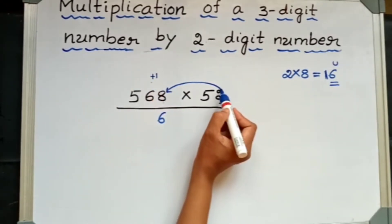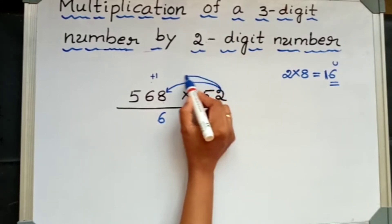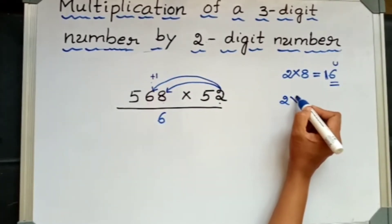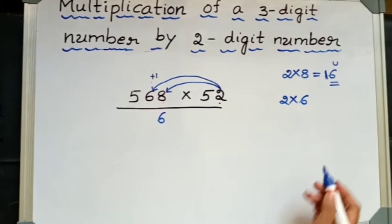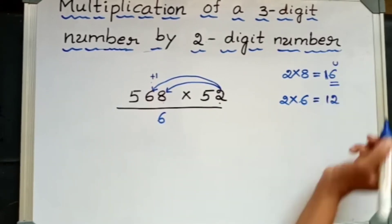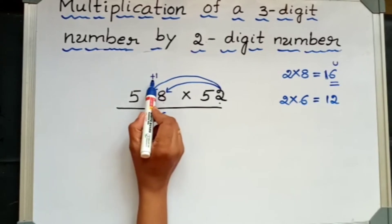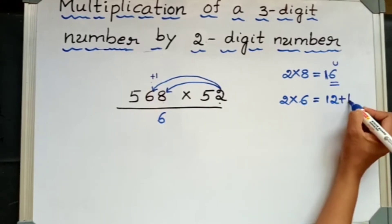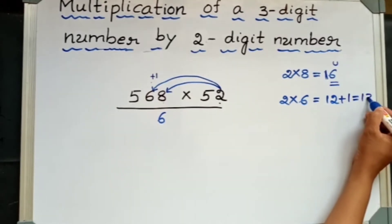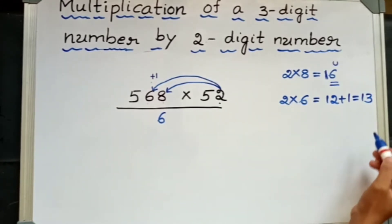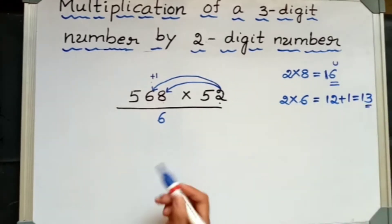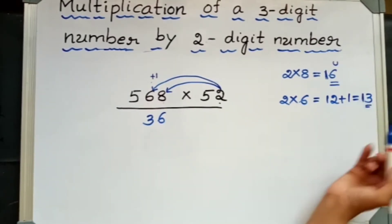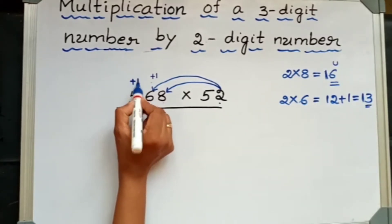Then, from this 2, I have to multiply 6. That is 2 × 6 is 12. I have written plus 1, means 1 is the carryover. So I have to add plus 1. 12 plus 1 is 13. So in this number, 3 is in the unit place, so I will write here 3. Then this 1, I will take it as carryover plus 1.